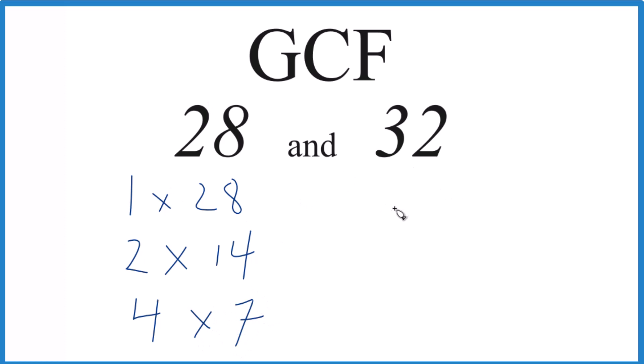For 32, we'd have 1 times 32, 2 times 16, 4 times 8, and I think that's it. So now we can compare the lists and find the greatest common factor.